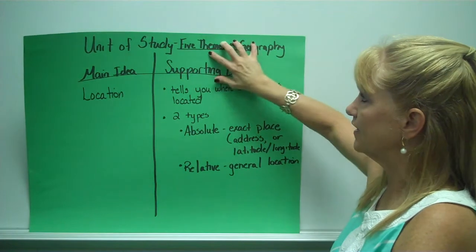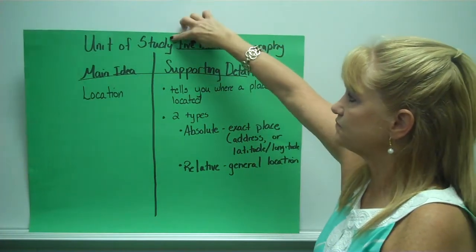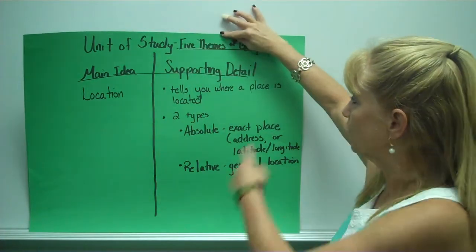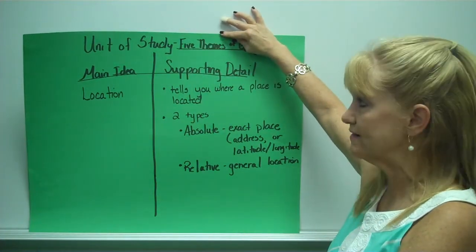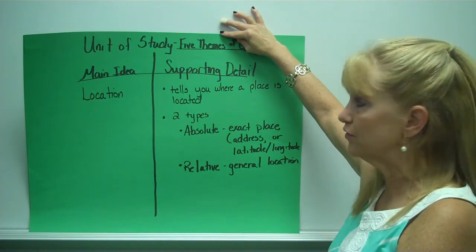So this is what the paper would look like. At the top of the page, they would have the unit of study. Their main idea would go on the left-hand side and their supporting details would be on the right-hand side. Remember, main idea is in black and supporting details in green or blue.